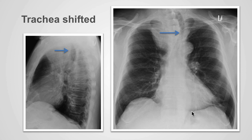The trachea can be displaced by pathology involving the mediastinum or the hila. In this example, there is an anterior mediastinal mass that is displacing the trachea to the left and narrowing the caliber of the trachea. The trachea is also displaced posteriorly, and this posterior displacement is best seen on the lateral x-ray.